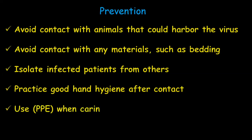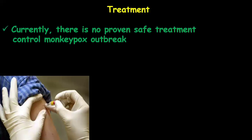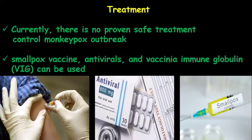Use personal protective equipment when caring for patients. There is a vaccine called Jynneos, which is an attenuated live virus vaccine approved by the US, used for the prevention of monkeypox. Currently, there is no proven safe treatment for monkeypox virus infection. We can control outbreaks using the smallpox vaccine, antivirals, and vaccinia immunoglobulin.